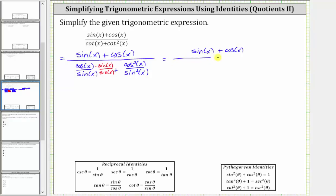And now determining the sum, the common denominator is sine squared x, with numerator cosine x times sine x plus cosine squared x.